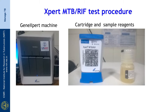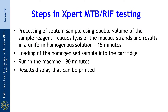Here we see a 4-module machine in which 4 samples can be run independently at the same time. The next picture shows a cartridge used for the test run and the sample reagent. The first step is sample processing using double volume of sample reagent, which cleaves the mucus strands and results in a uniform homogeneous solution; this step takes about 15 minutes. Then the sample is loaded onto the cartridge and run in the machine for nearly 90 minutes, and the results are displayed, which can be printed or documented in an Excel sheet.